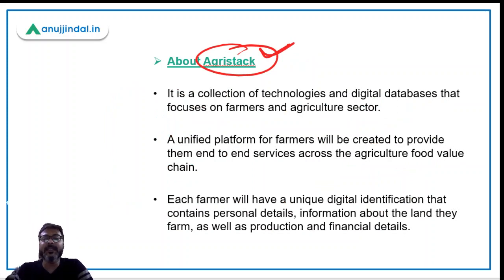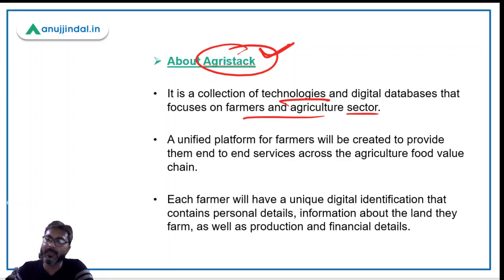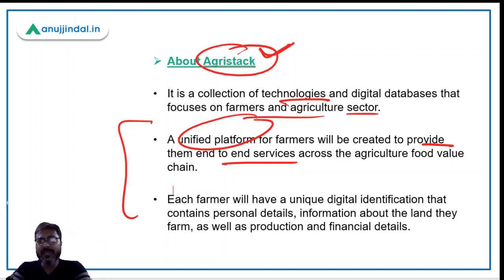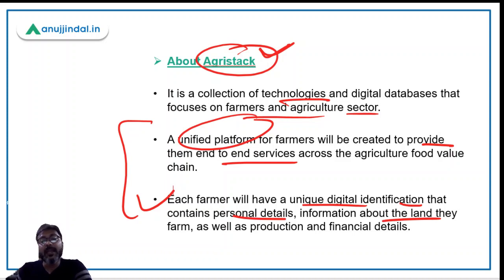AgriStack is essentially a collection of technologies and digital databases focused on farmers in the agriculture sector. It will be a unified platform that provides farmers end-to-end services across the agriculture and food value chain — all kinds of services and information will be available through this platform. Each farmer will have a unique digital identification through which they can access AgriStack, and this ID will contain all personal details, land information, and production and financial details of the farmer.